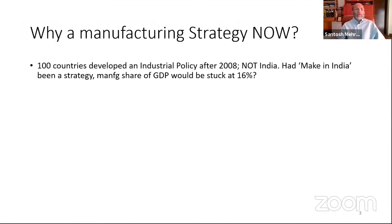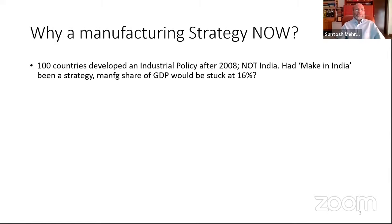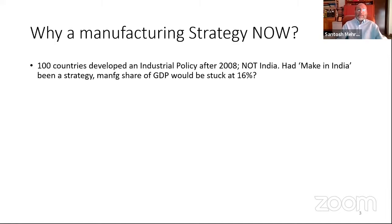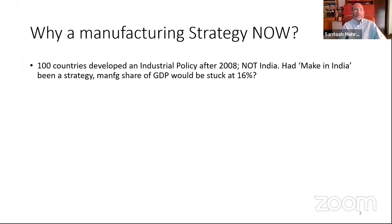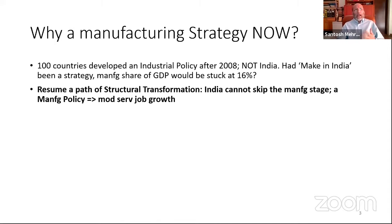Why do we need a manufacturing strategy now? Manufacturing has slowed, and in the 29 years since the 1991 economic reform, India still does not have an industrial strategy. One hundred countries developed an industrial policy after the 2008 global economic crisis — not India. Had Make in India been a real manufacturing strategy, the manufacturing share of GDP would not be stuck at 16 percent, where it has remained since 1991 till date. Because manufacturing has not been a lead sector driving growth, we need to resume a path of structural transformation.